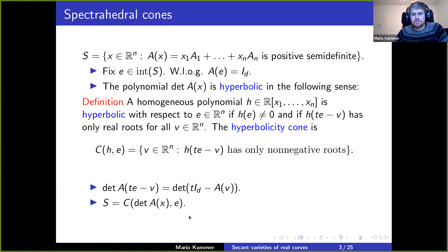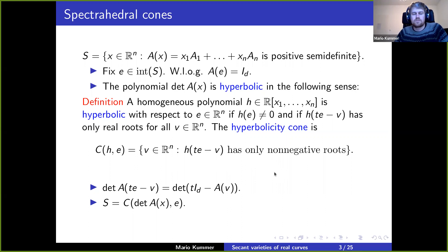When does this polynomial have only non-negative roots? That means the matrix has only non-negative eigenvalues, so it must be positive semi-definite. This calculation shows that every spectrahedral cone must be the hyperbolicity cone of a certain hyperbolic polynomial, and this is a rather restrictive condition.